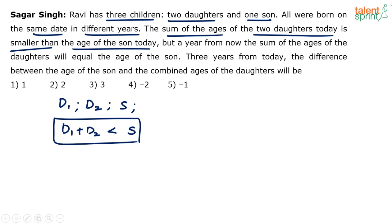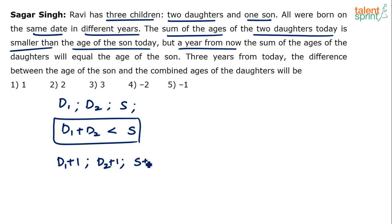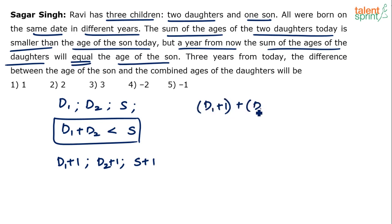But a year from now, the sum of the ages of the daughters will equal the age of the son — that's an important statement. After one year, their present ages D1, D2, and S will become D1+1, D2+1, and S+1. So after one year: (D1+1) + (D2+1) = S+1. Simplifying: D1 + D2 + 2 = S + 1.